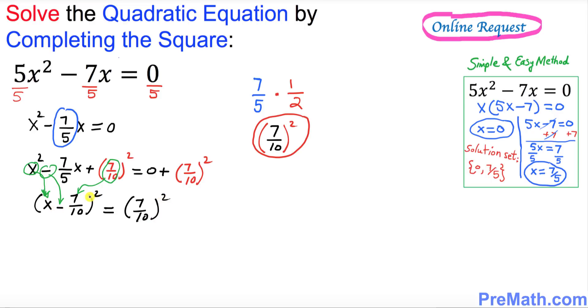To undo square, we must take the square root on both sides. This square and square root, they undo each other. We got x minus 7/10 equal to plus or minus 7/10.